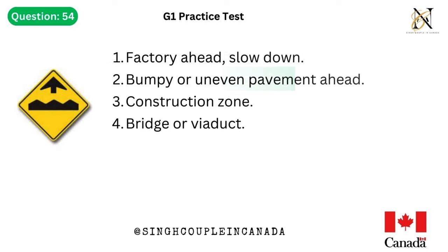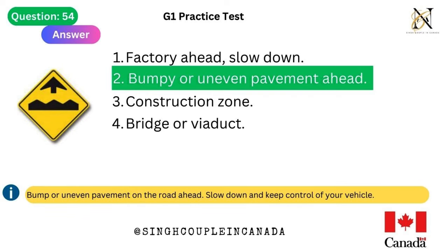Question 54. This traffic sign means: 1. Factory ahead, slow down. 2. Bumpy or uneven pavement ahead. 3. Construction zone. 4. Bridge or viaduct. Answer is 2. Bumpy or uneven pavement ahead. Bump or uneven pavement on the road ahead — slow down and keep control of your vehicle.